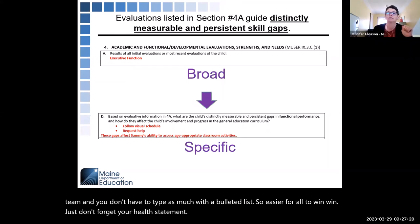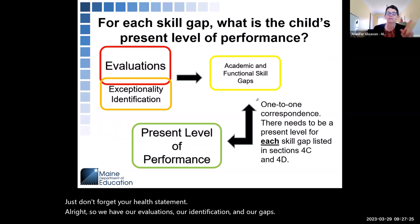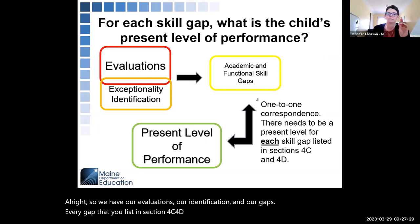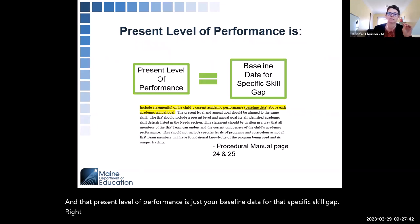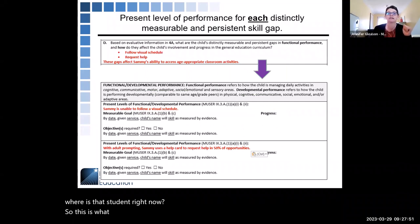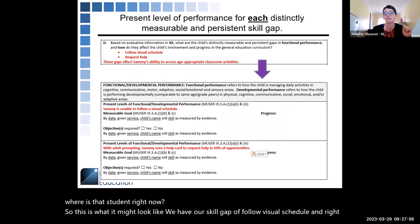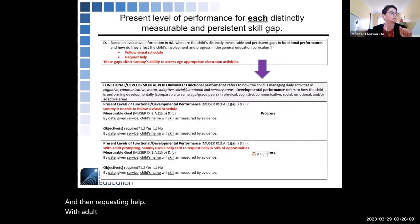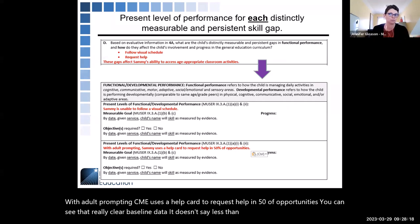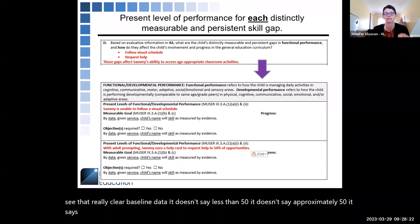Every gap that you list in sections 4C, 4D, and 4E gets a present level of performance. That present level is just your baseline data for that specific skill gap — where is that student right now? So this is what it might look like: we have our skill gap of 'follow visual schedule,' and right now CME is unable to follow a visual schedule — we read that as 0%, unable to. For requesting help, with adult prompting, CME uses a help card to request help in 50% of opportunities. It doesn't say 'less than 50' or 'approximately 50' — it says 50. You want really clear baseline data.